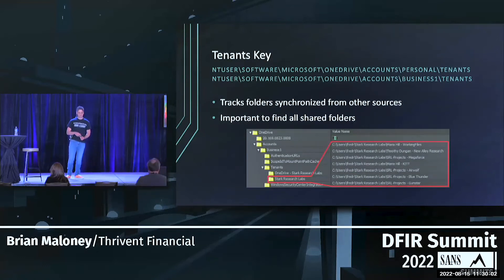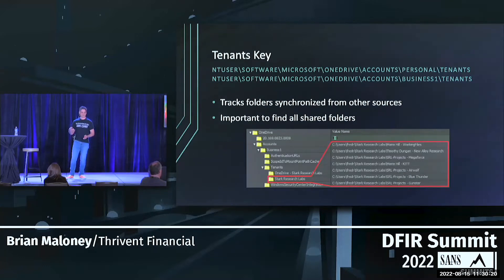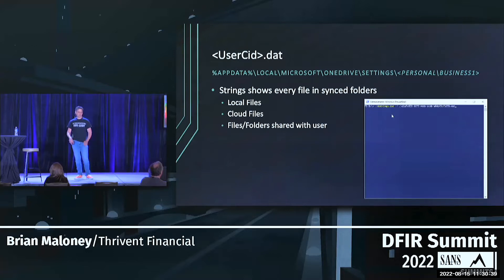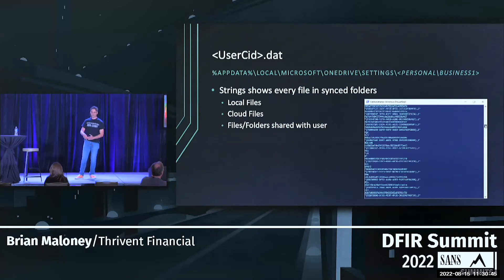The first artifact I want to touch on is the Tenants key. What this key does is track the folders that are synced from other sources. It's important to look at this location to find where on the endpoint all these files are stored, because when they're shared out they're not always in the user's OneDrive folder — they can be stored in other locations. For metadata, you have the user.sid.dat file stored in Local\Microsoft\OneDrive\Settings, depending on if it's personal or business.